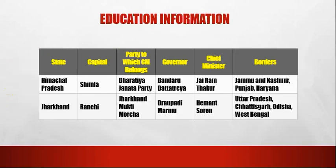The next state is Himachal Pradesh. The capital of Himachal Pradesh is Shimla. The party to which the CM belongs is Bharatiya Janata Party. The governor is Bandaru Dattatraya. The chief minister is Jai Ram Thakur. The borders are Jammu & Kashmir, Punjab and Haryana.